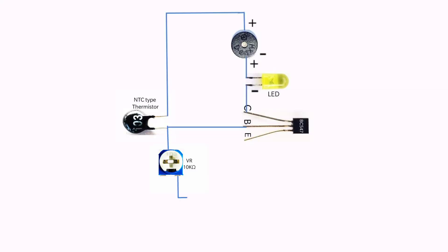Connect the movable contact of the variable resistor to the base of the transistor, and the fixed terminal to the emitter of the transistor.